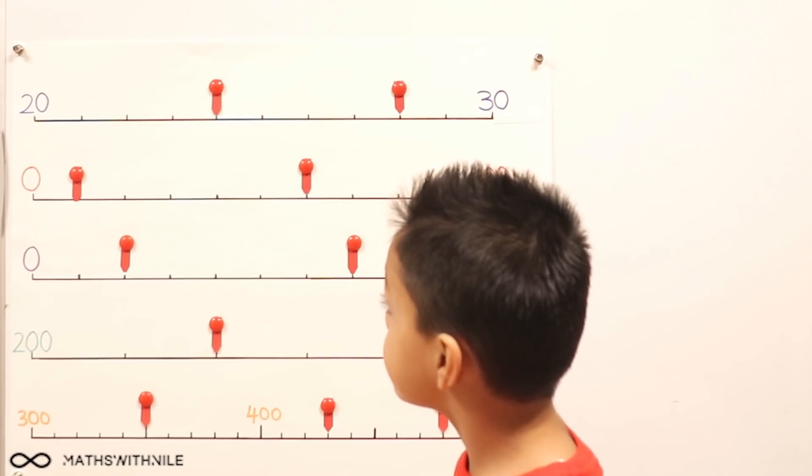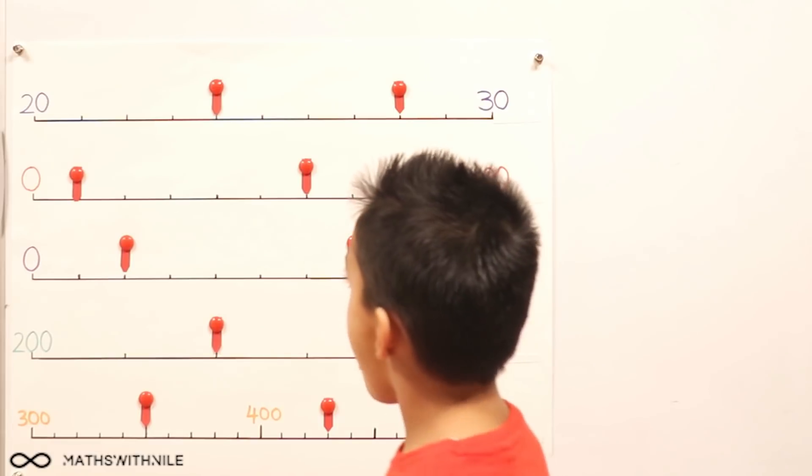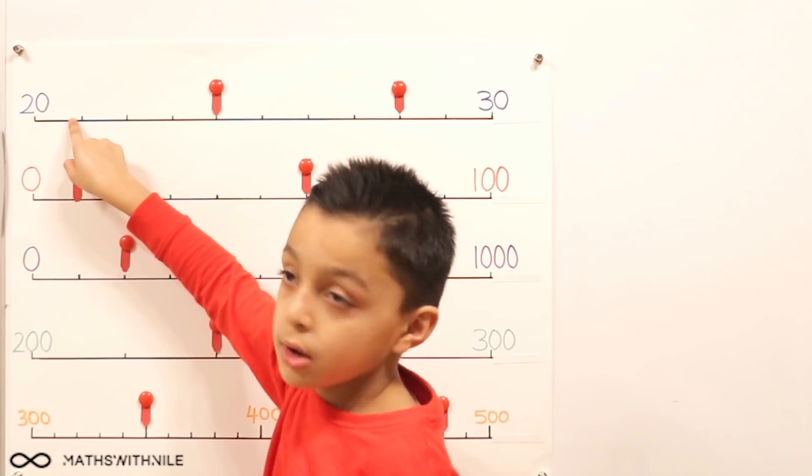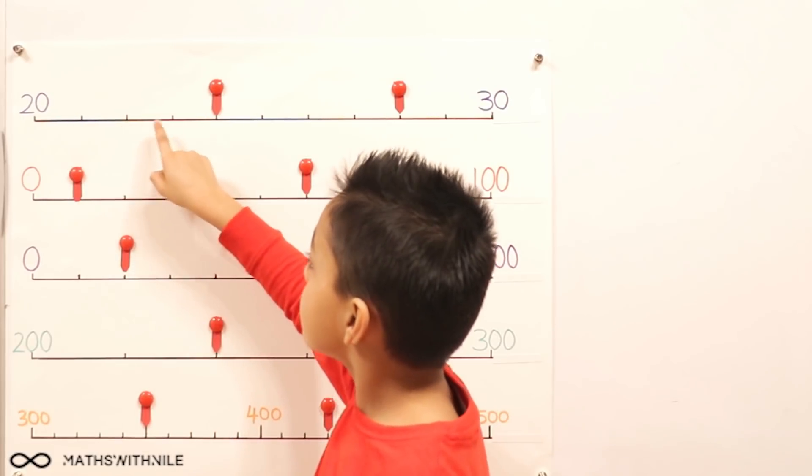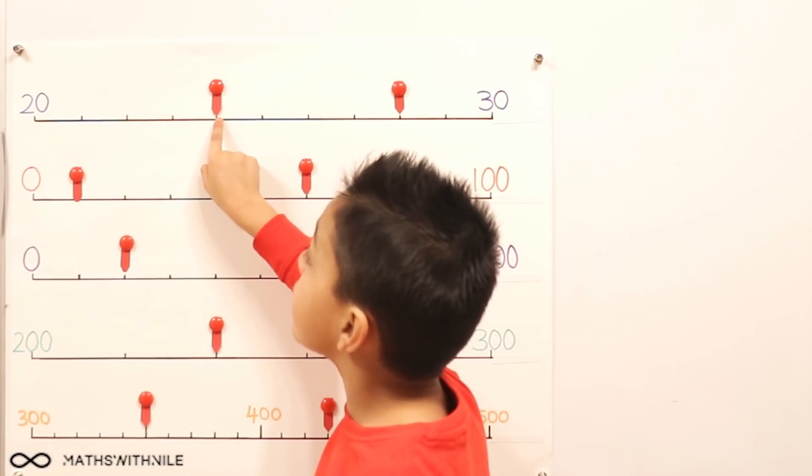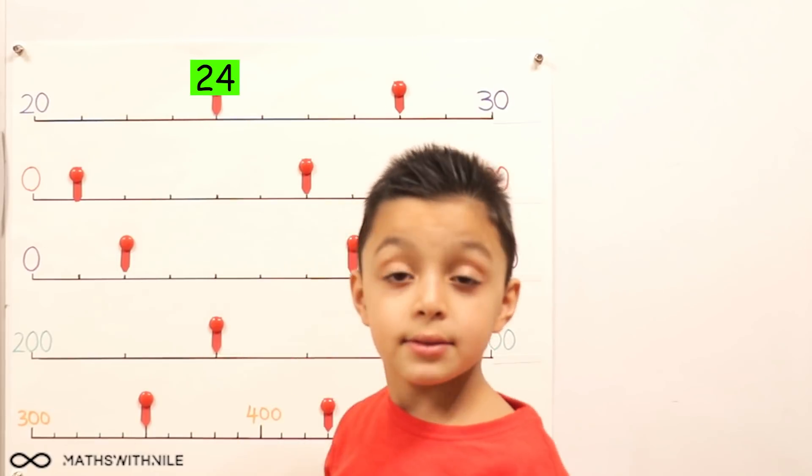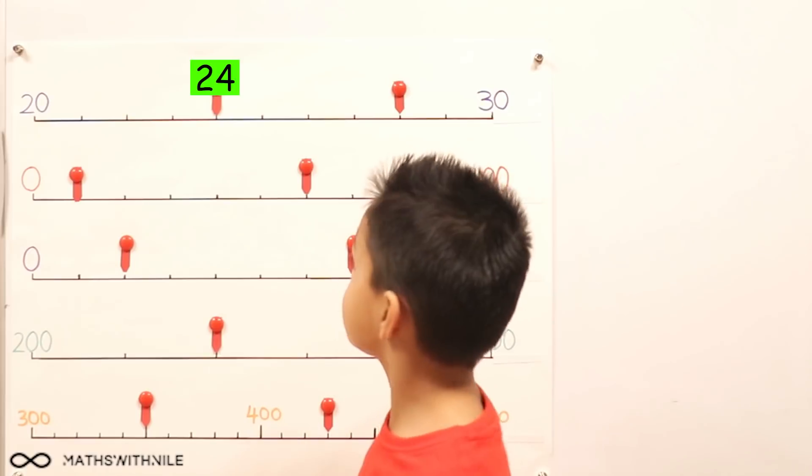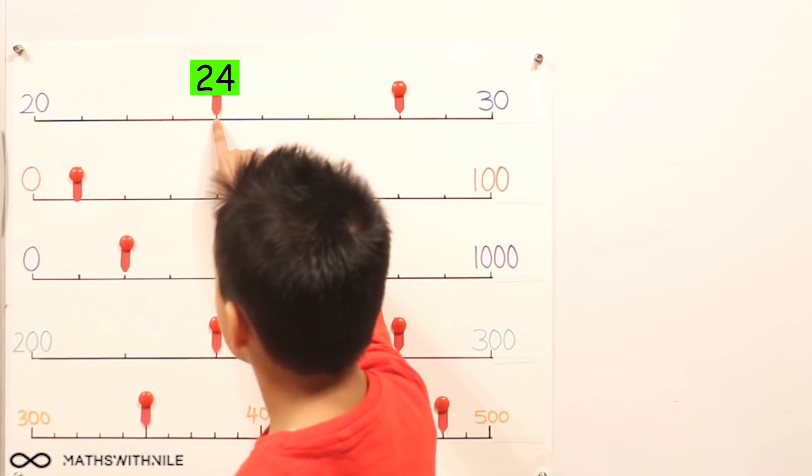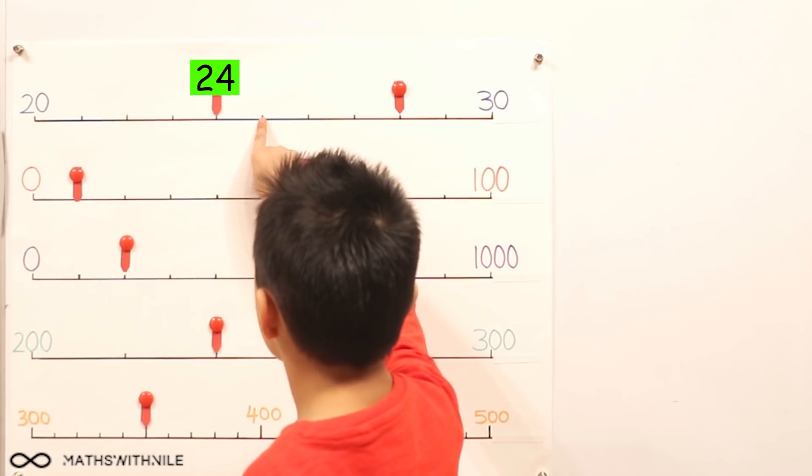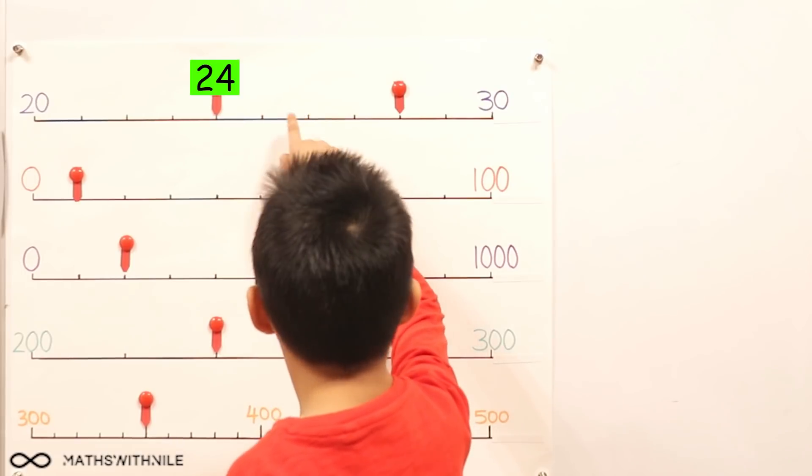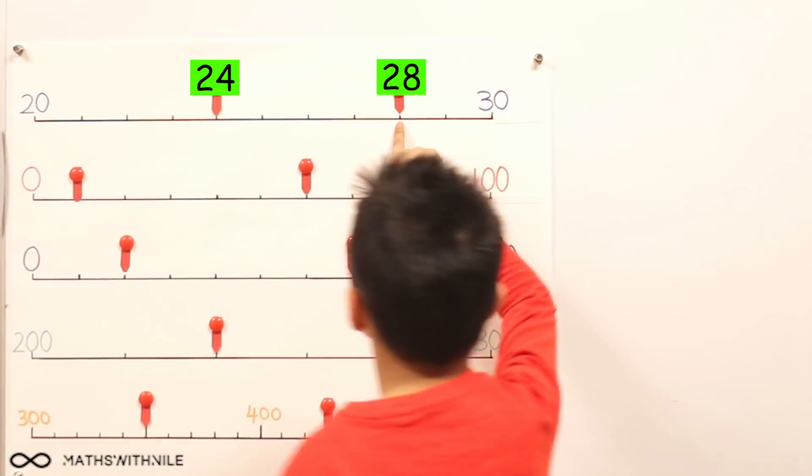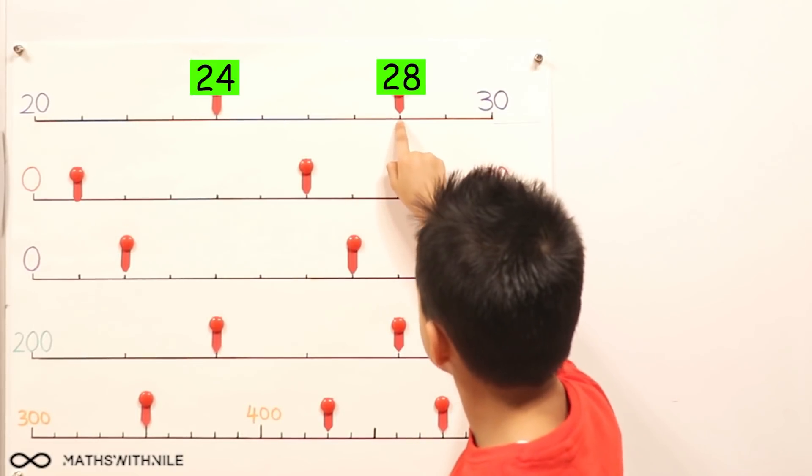So why don't you tell us the first number? So 20, 21, 22, 23, 24. So that arrow is pointing to 24. Very good. What about the second arrow? You can continue on. 24, 25, 26, 27, 28. Brilliant, 28. Good job Niall.